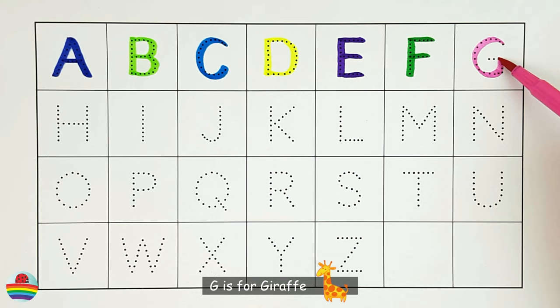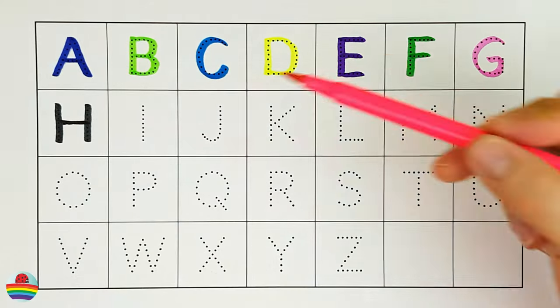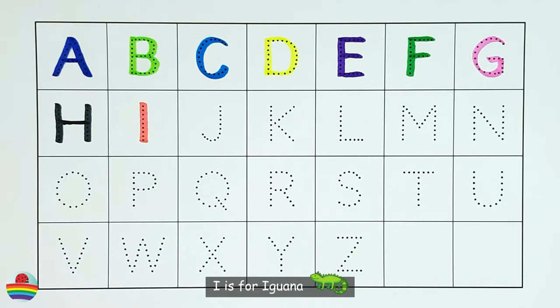G. G is for giraffe. G. H. H is for hippopotamus. H. I. I is for iguana. I.